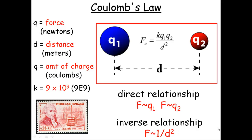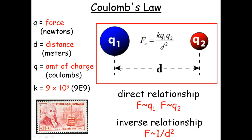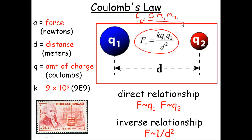Here we are — Coulomb's Law. Coulomb's Law should look very familiar, even though you've probably never seen it before. Coulomb's Law, which is right here, kind of looks like Newton's universal law of gravity. The force of gravity equals G instead of K, M1 instead of Q1, M2 instead of Q2, over the distance squared. Should look very familiar.